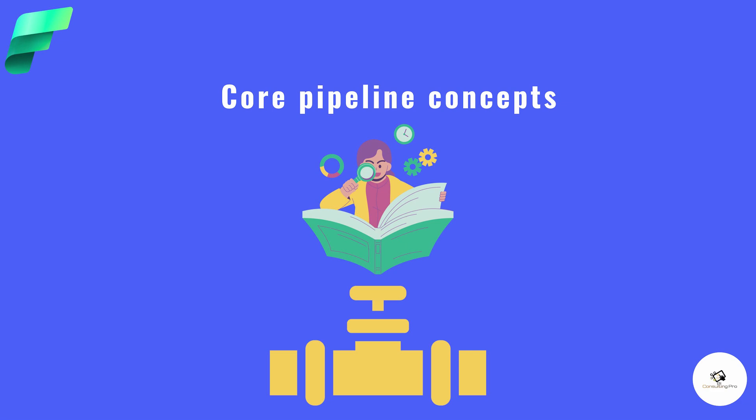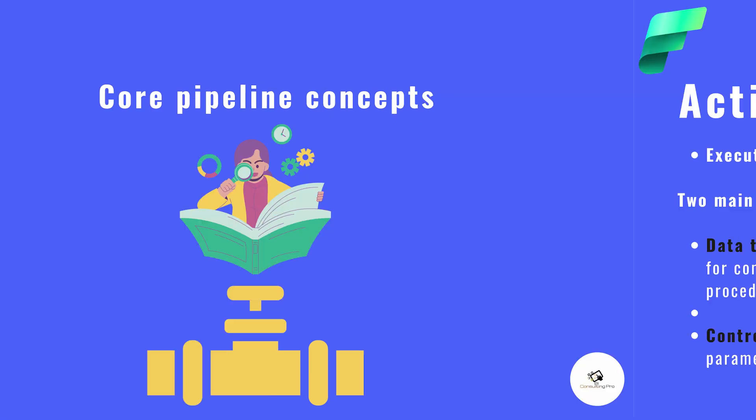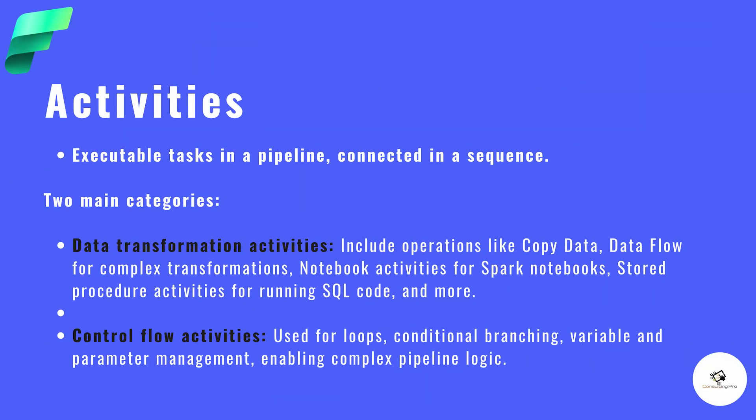There are some core concepts about data pipelines. One of them is an activity — whenever you are performing any task it's known as an activity. For example, a copy activity is an activity. You can also use Data Flows Gen 2 as an activity, or use notebooks — that's also an activity. You can also use data through some files — that is also an activity.